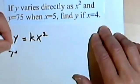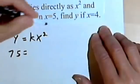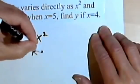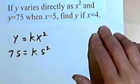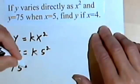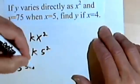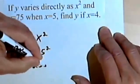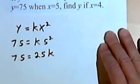And when y is 75, x is 5. So I'm gonna have k times 5 squared. Well, let's square the 5. So 75 equals... and I'm gonna switch these around and make it 25k.